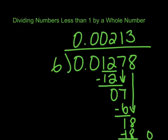So our answer to this question of 0.01278 divided by 6 is 0.00213. Or if we're looking at this, this is a number that's way, way smaller than 1.